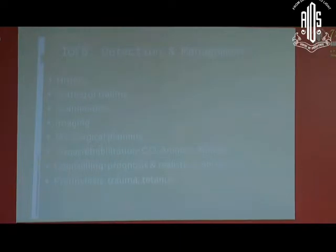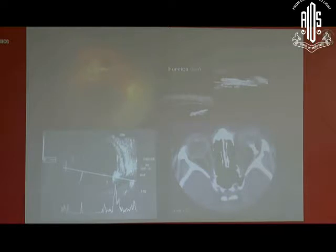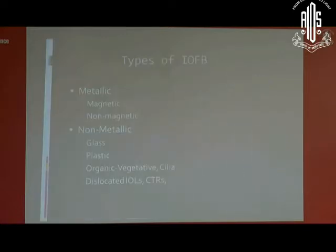Tetanus prophylaxis should be provided where appropriate, and polycarbonate glasses should be allocated. This slide shows a foreign body, and you can make out arteriolar occlusion beyond it — which makes it really unusual. Imaging — ultrasound, CT scan, and UBM in certain cases — can pick up foreign bodies. The situation depends on what type of foreign body we are dealing with: it could be metallic or non-metallic. The metallic could be magnetic or non-magnetic. Non-metallic could be glass, plastic, organic, or various other types.